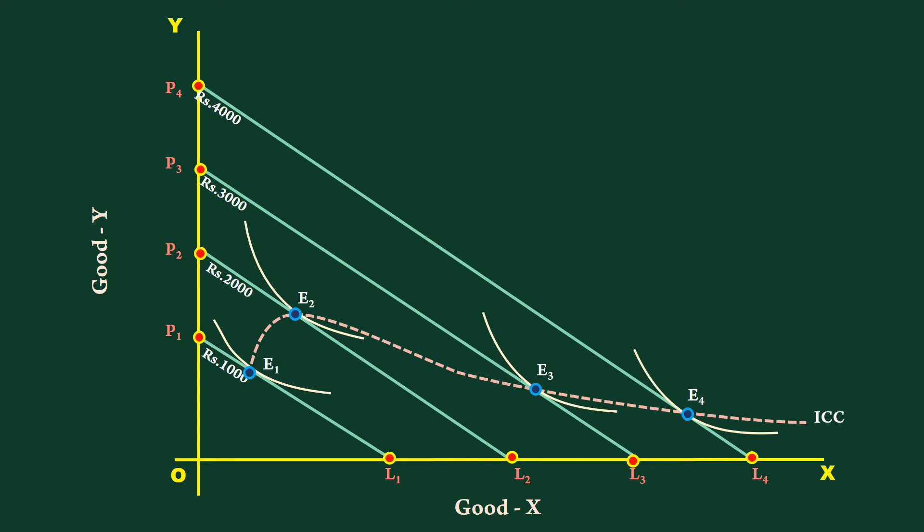We shall examine what happens to the quantity consumed of good X and good Y at various levels of income. Take good Y first. Consumer buys 75 units at income 1000 rupees. The purchase increases to 150 units when the income increases to 2000 rupees.